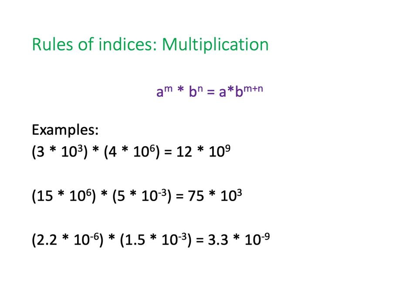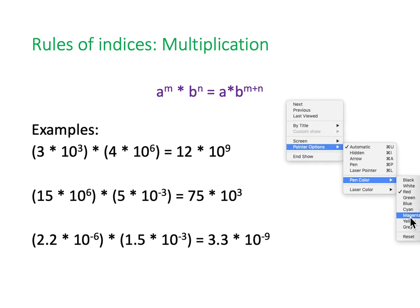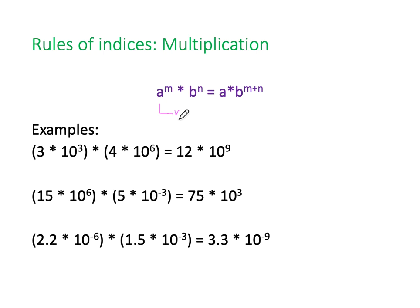So our first rule of indices is multiplication. Whenever we multiply two numbers together that have indices or powers in them. So here we're multiplying A and B, the numbers A and B are being multiplied together. We multiply the numbers together. But you'll notice with the indices, we are actually adding them up. So that's the rule. You multiply the coefficients, but you add the indices or the exponents. So a couple of quick examples. 3 times 10 to the 3 multiplied by 4 times 10 to the 6. So 3 times 4 is 12. And then 3 plus 6 on the exponents equals 9.